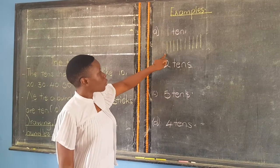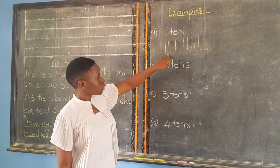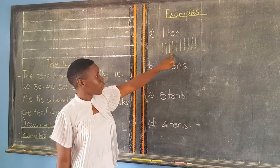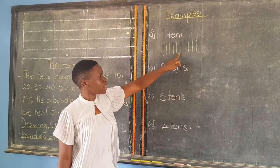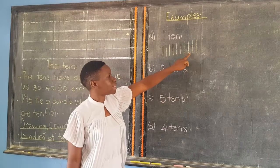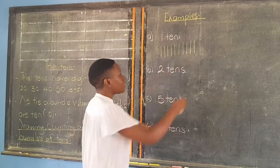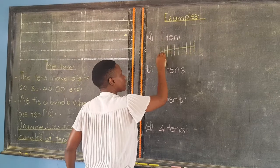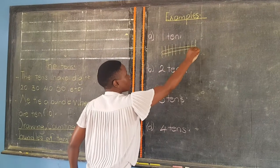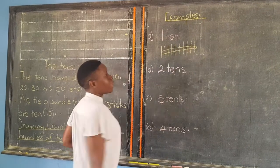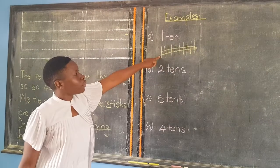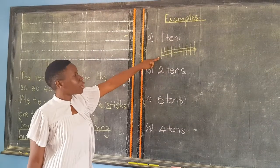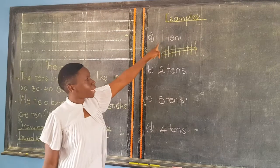We count again: one, two, three, four, five, six, seven, eight, nine, ten. Then we tie. This one becomes a bundle of ten — the bundle of one ten.